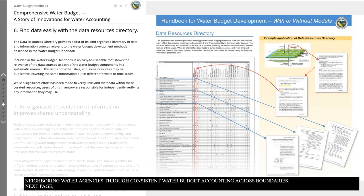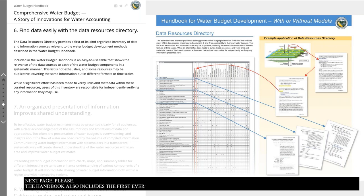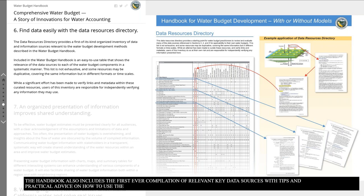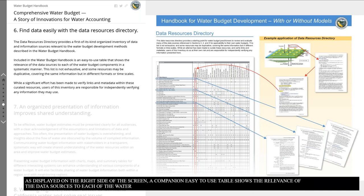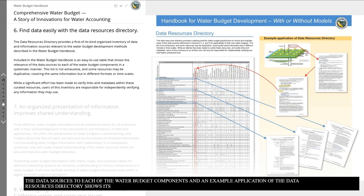The handbook also includes the first-ever compilation of relevant key data sources with tips and practical advice on how to use the sources to develop estimates of various water budget components. A companion, easy-to-use table shows the relevance of the data sources to each of the water budget components, and an example application of the data resources directory shows its utility for estimating water budget components.